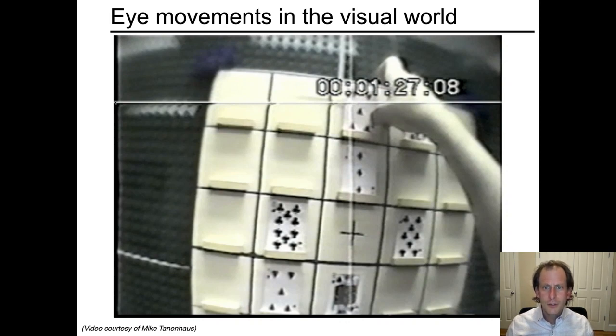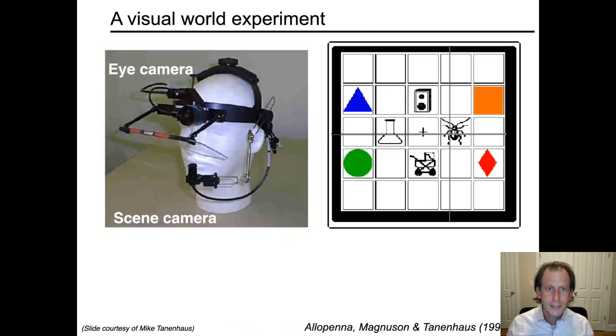So that's eye movements in the visual world, but you can see that there's a tight correspondence between the language and actually where the eyes move. There's a lot of signal there, but it's also very noisy. The eyes move around all over the place. The timing is different from moment to moment, trial to trial. So how do we actually systematize this?